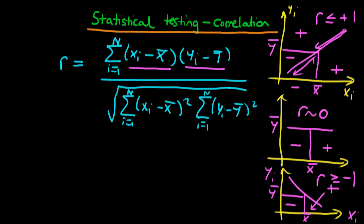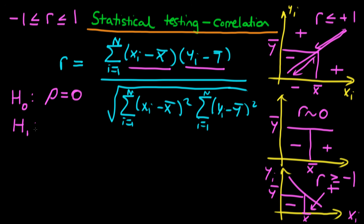So that's how you calculate the correlation coefficient in a sample. We know that in a sample, minus 1 is always less than or equal to the sample correlation, which is less than or equal to plus 1. But how do we actually test for significance of the correlation? What we're trying to do is test whether in the population there is a correlation. So the null hypothesis is that in the population the correlation is 0 — that is, rho equals 0, where rho represents the population correlation between x and y.